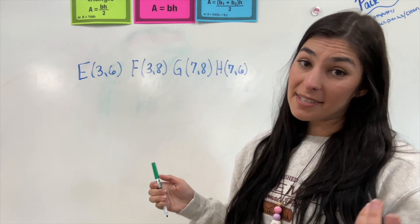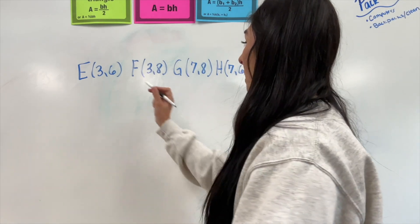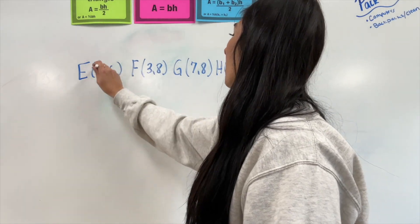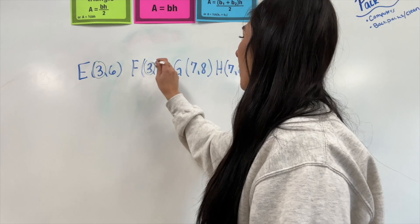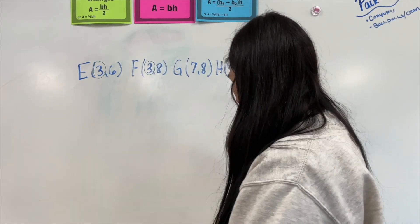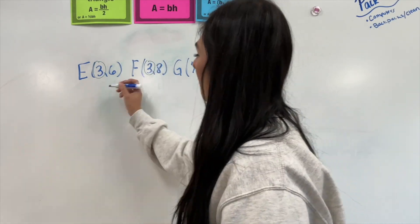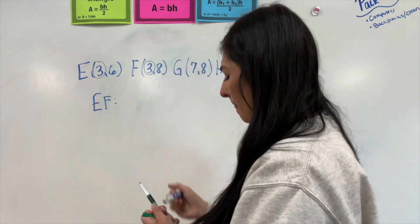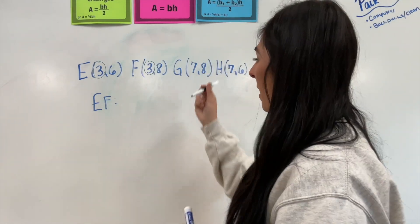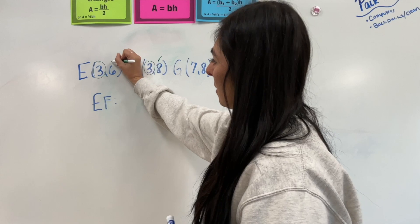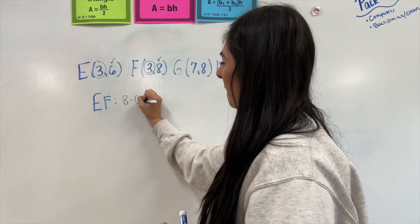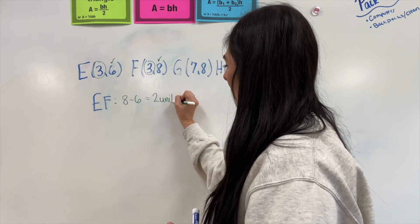I'm going to look for the X's that match. I see three and three. So, that means our coordinates E and F. I'm going to take the ones that don't match. So, I'm looking at eight and six. That's going to give me two units.